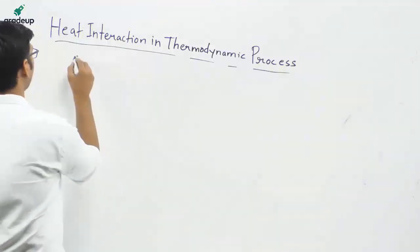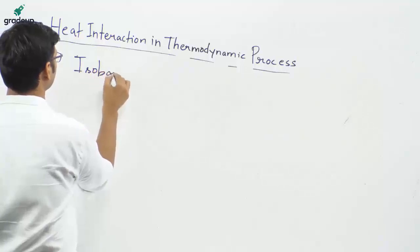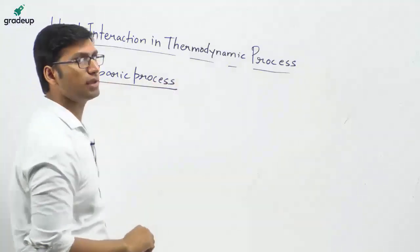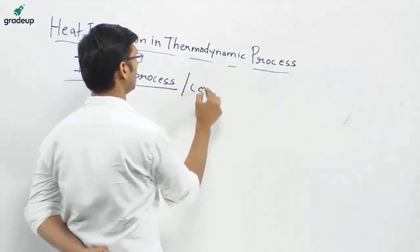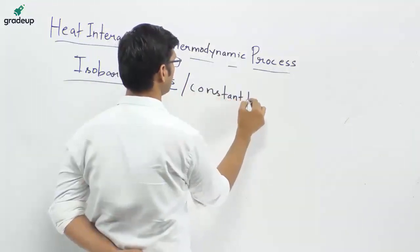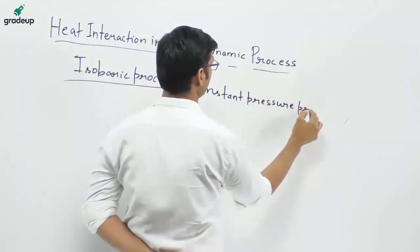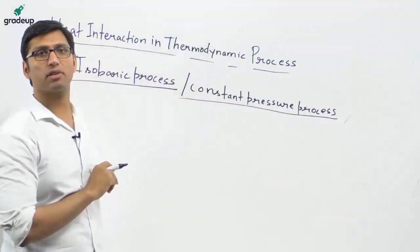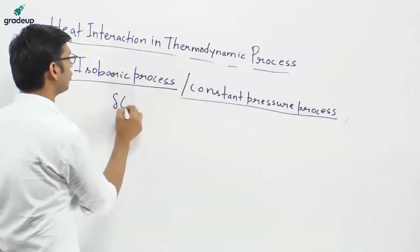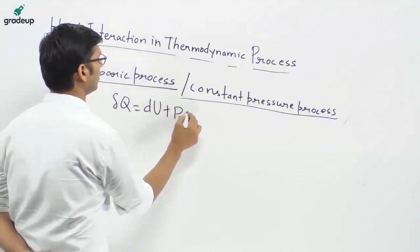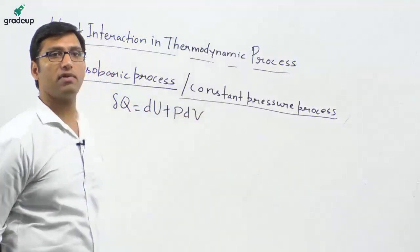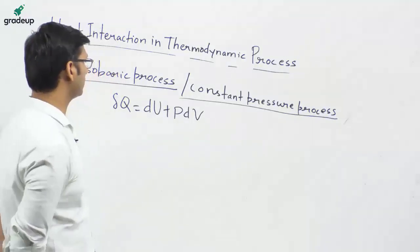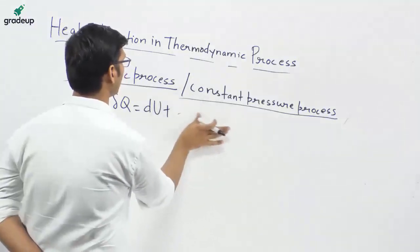If enthalpy is divided by mass, it becomes specific enthalpy — small h = small u + Pv. Now the first process we study is the isobaric process — constant pressure process. From the first law of thermodynamics, δQ = dU + PdV, meaning heat transfer equals internal energy change plus PdV work.